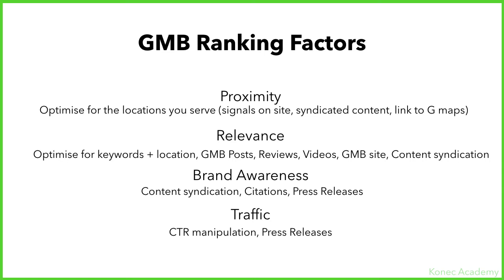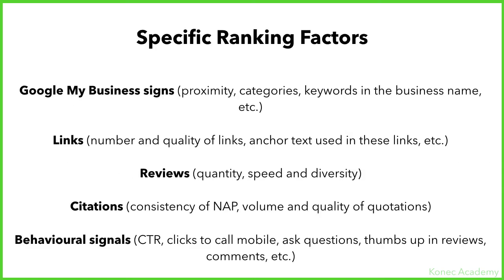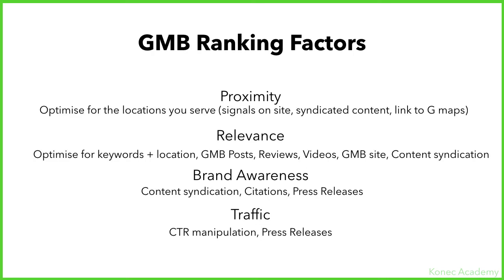Traffic is, of course, a ranking factor. A perfect example is: say you are ranking number one and your competitor is ranking number two. Ten people click on your site and it takes too long to load — people will just go back and click the second one. CTR manipulation, which is click-through rate manipulation — getting people to click your listing or website — and press releases also give you traffic. These four are the main GMB ranking factors.